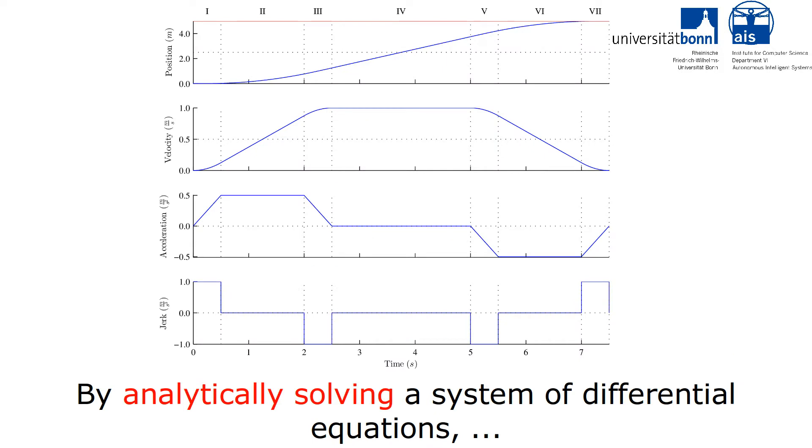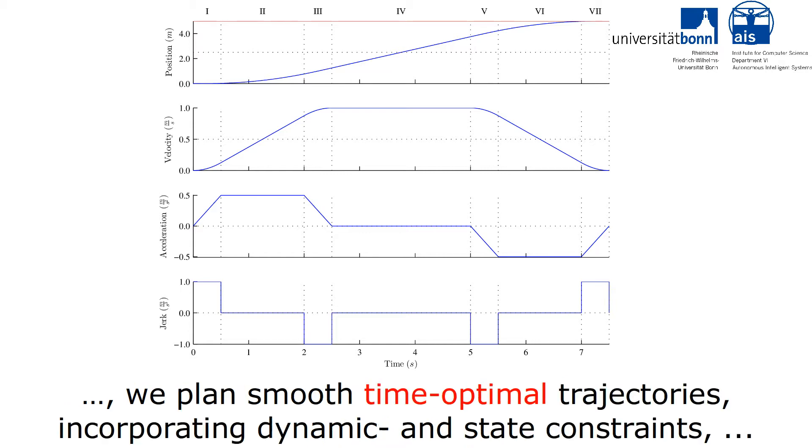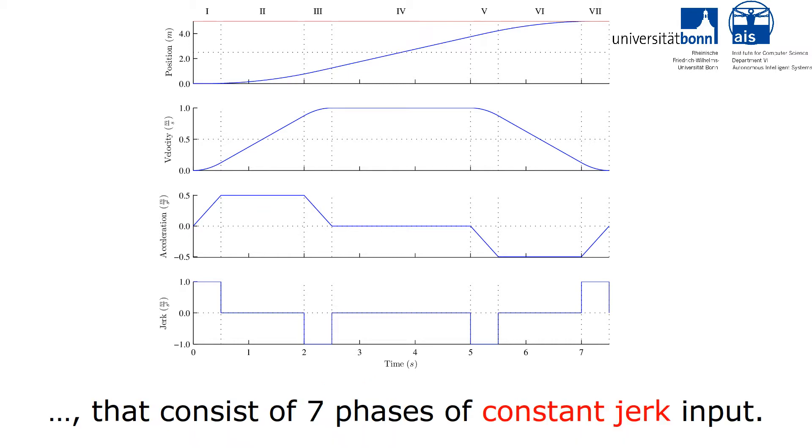By analytically solving a system of differential equations which describes a set of bang-singular-bang trajectories, we plan smooth time-optimal trajectories incorporating dynamic and state constraints that consist of seven phases of constant jerk input.